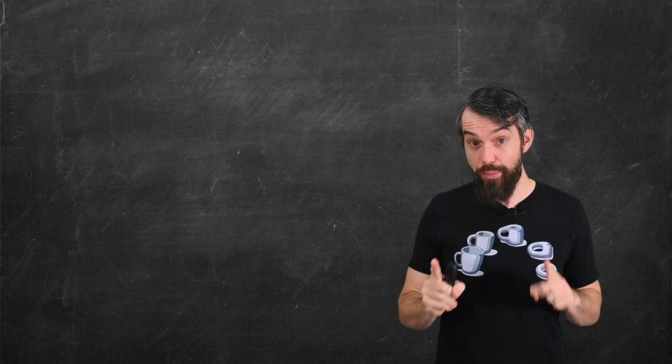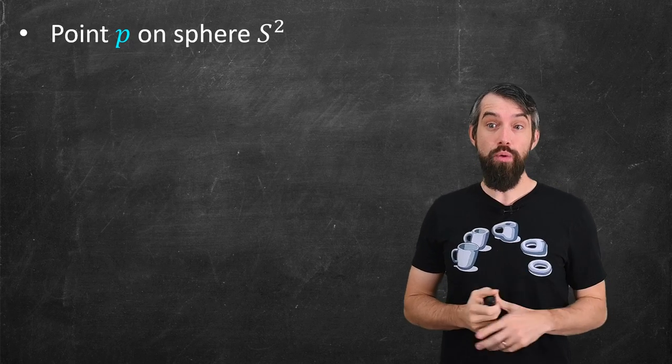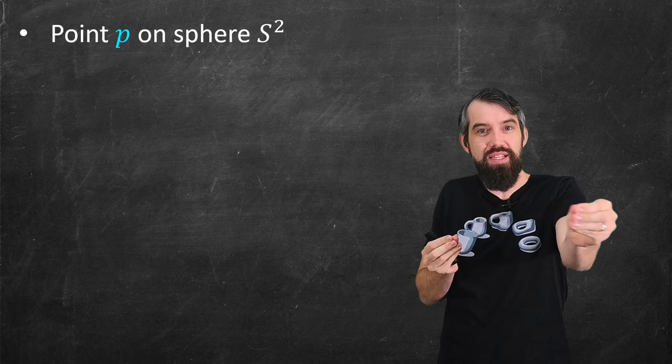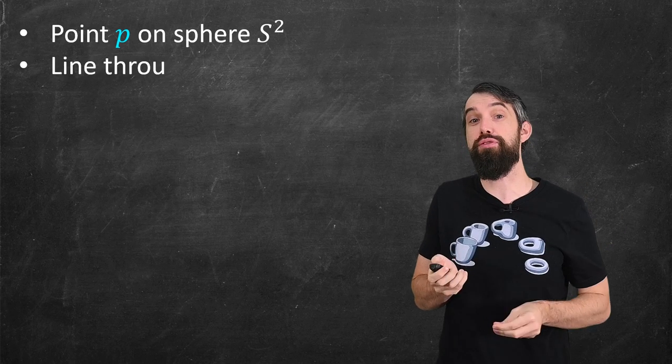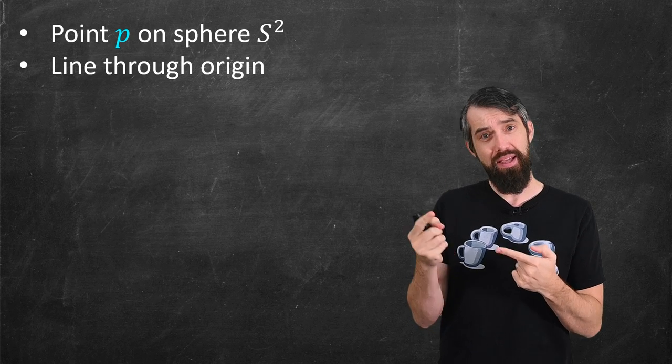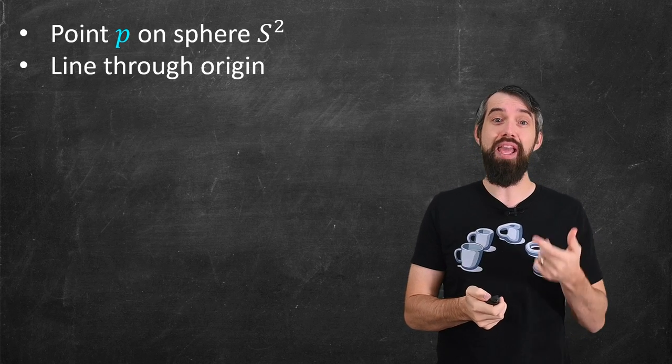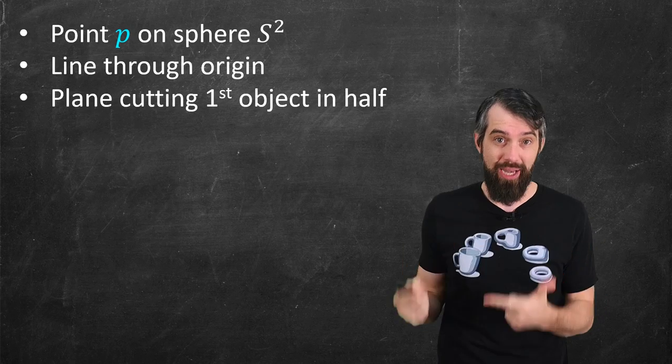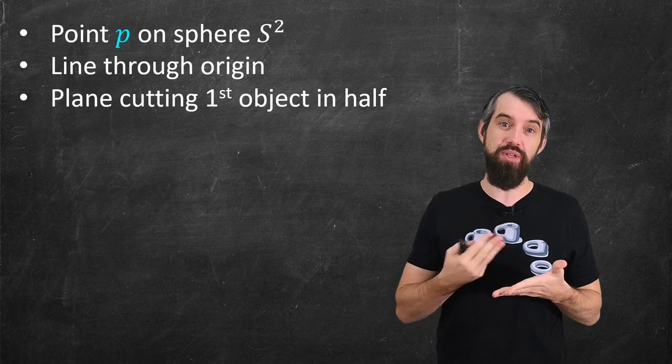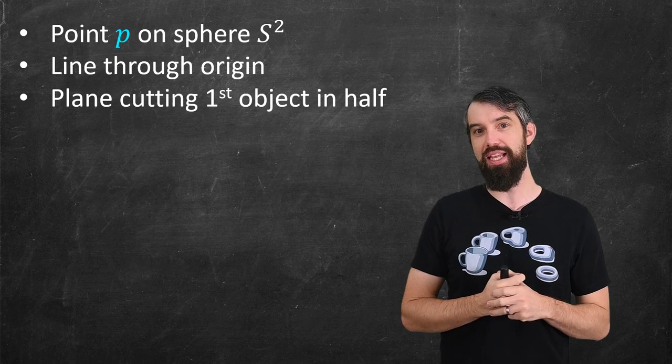Okay, so let's summarize where we're at. We began with a point on the surface of the sphere. The point then generated this line out from the origin through the sphere. It was like telling me a direction. Given those directions, you got a family of parallel planes, and specifically there was at least one of that family of plane that was cutting the first of the objects in half.